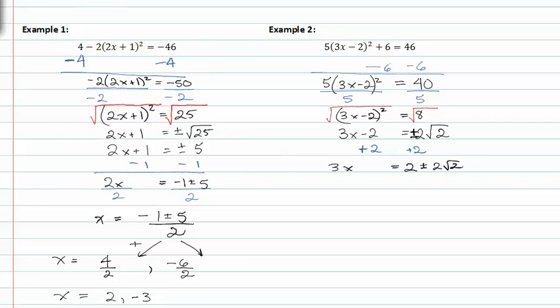Dividing by 3 to isolate x, I now have x = (2 ± 2√2)/3.